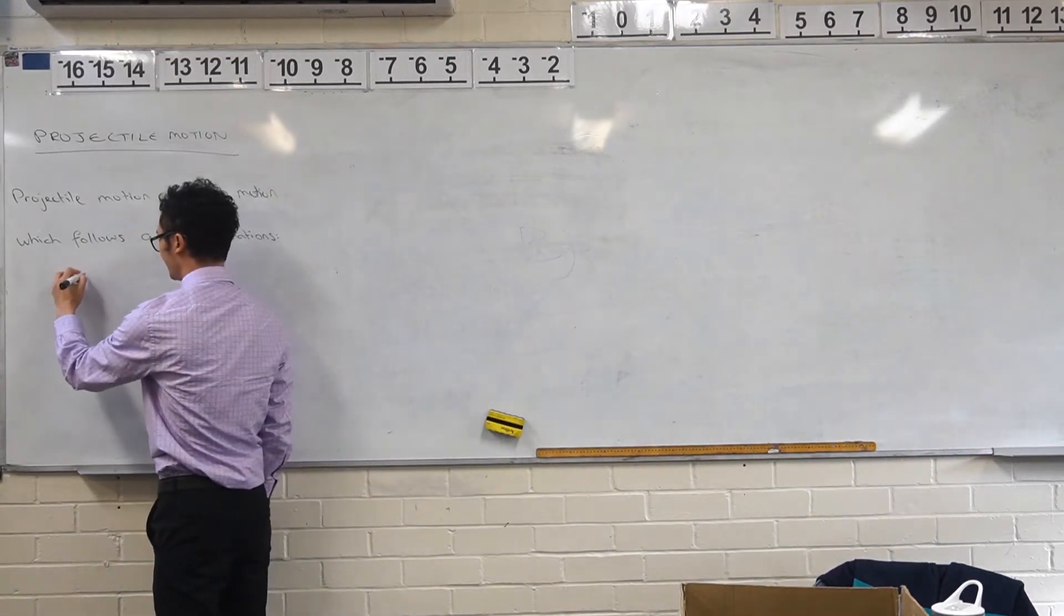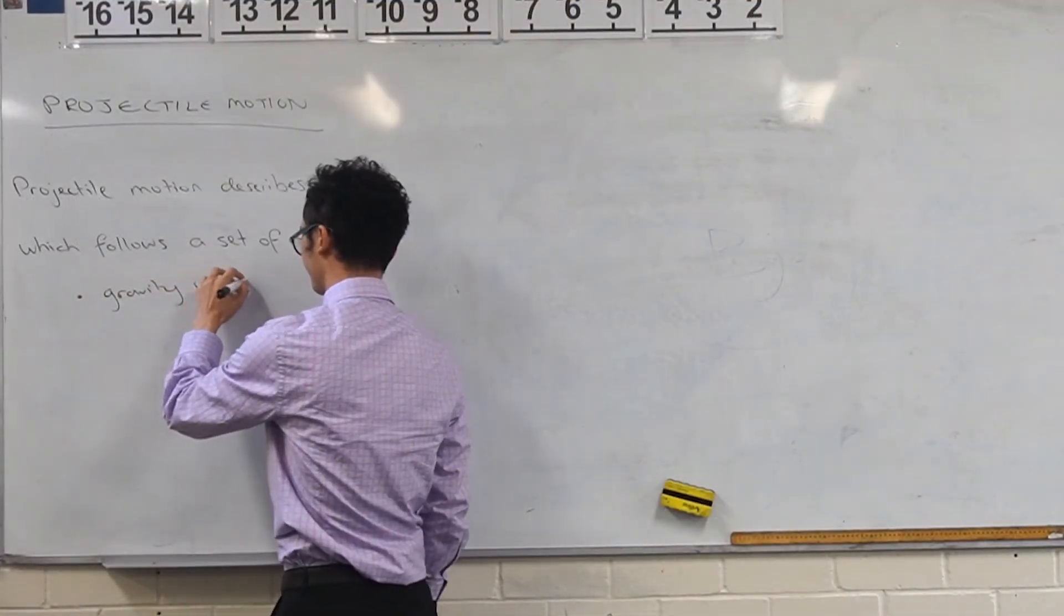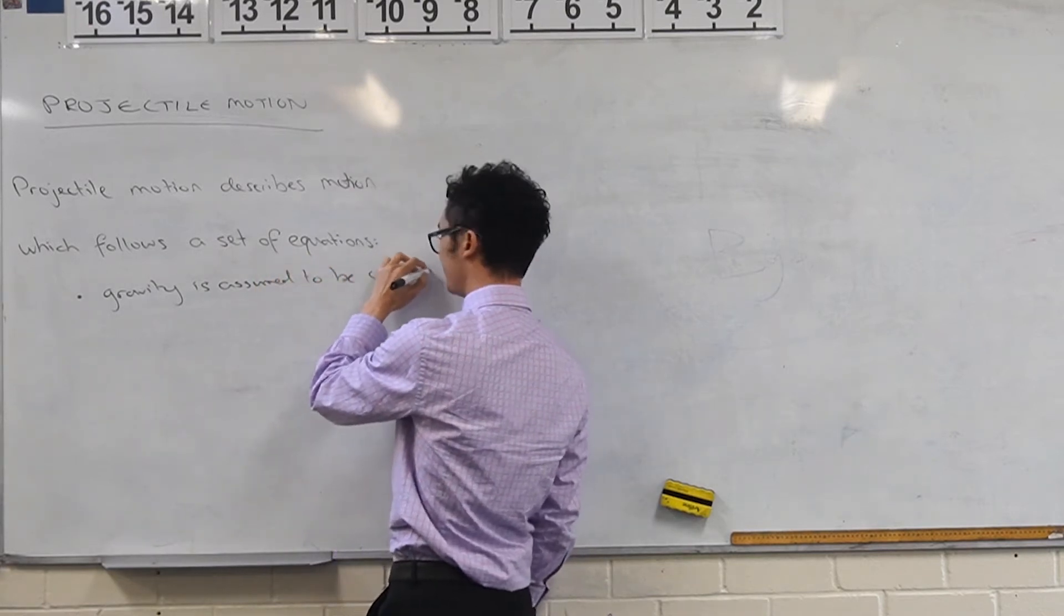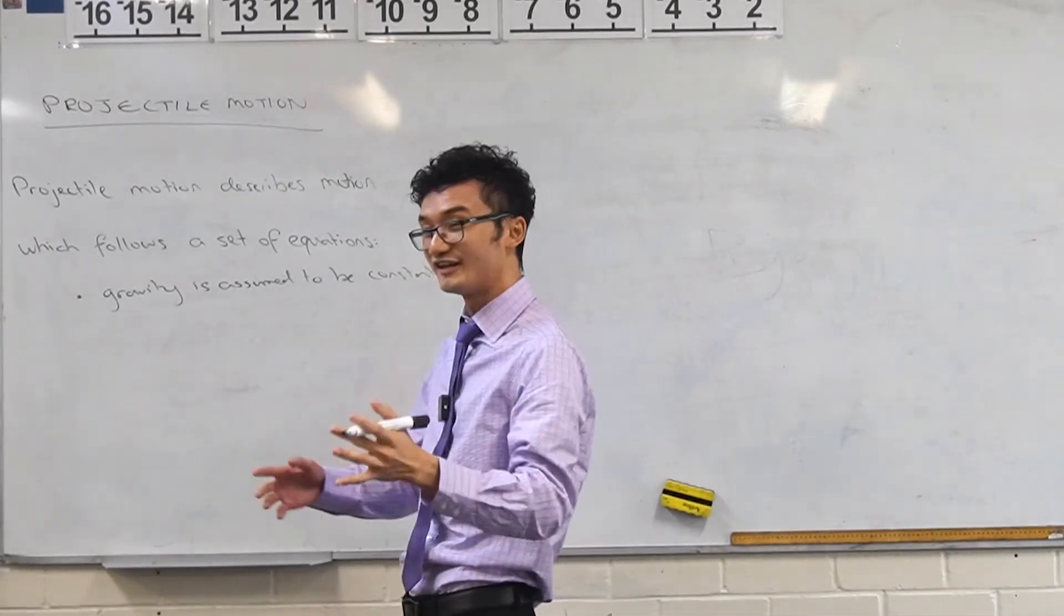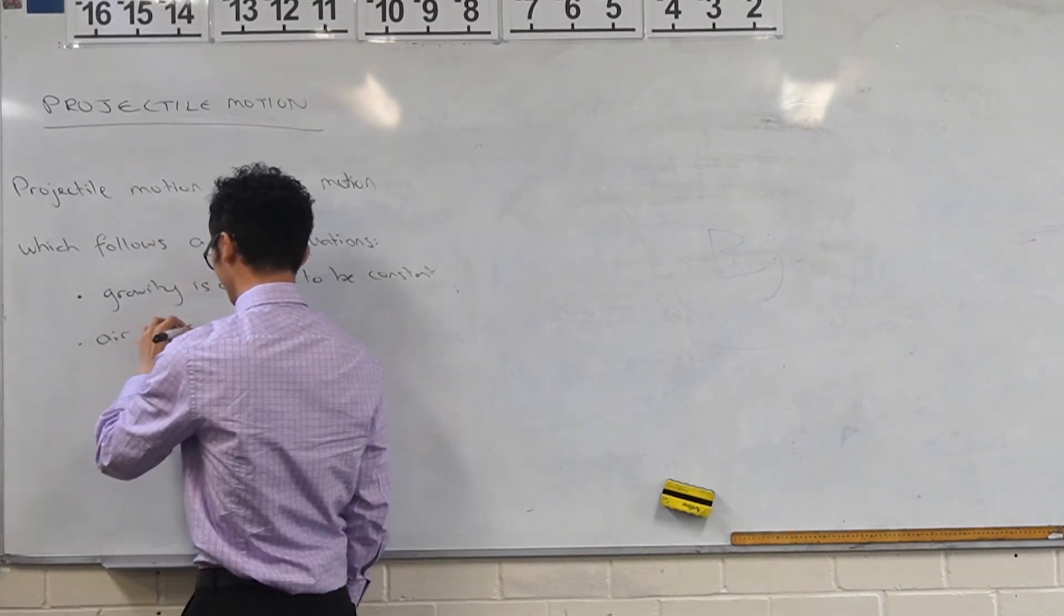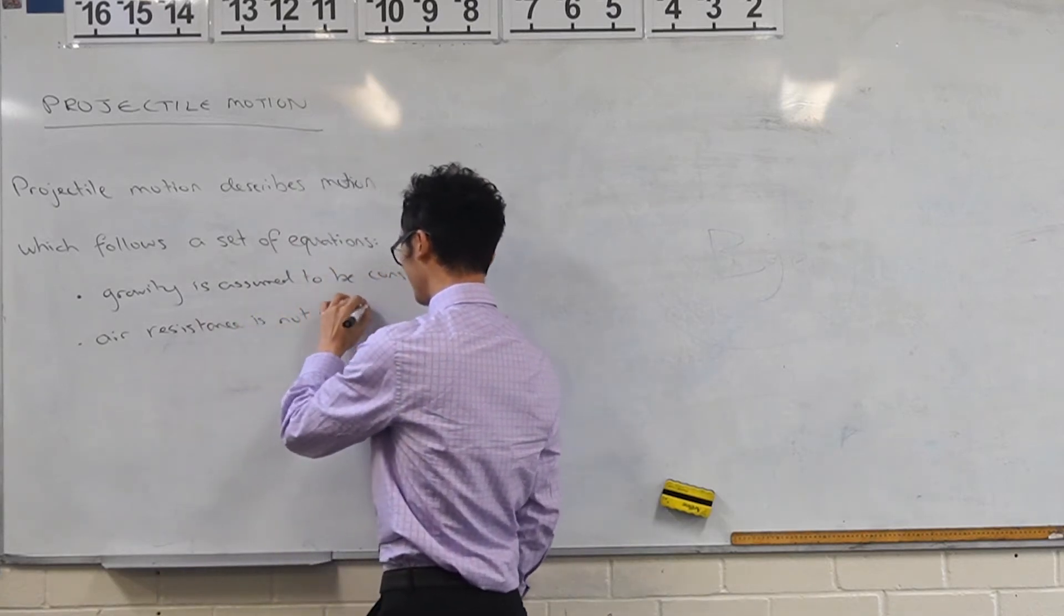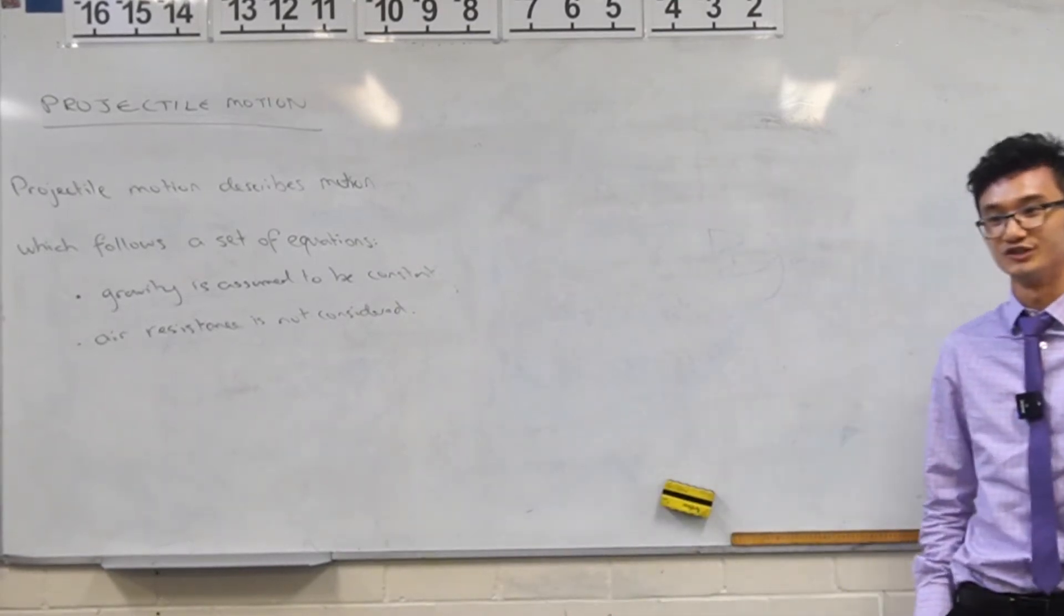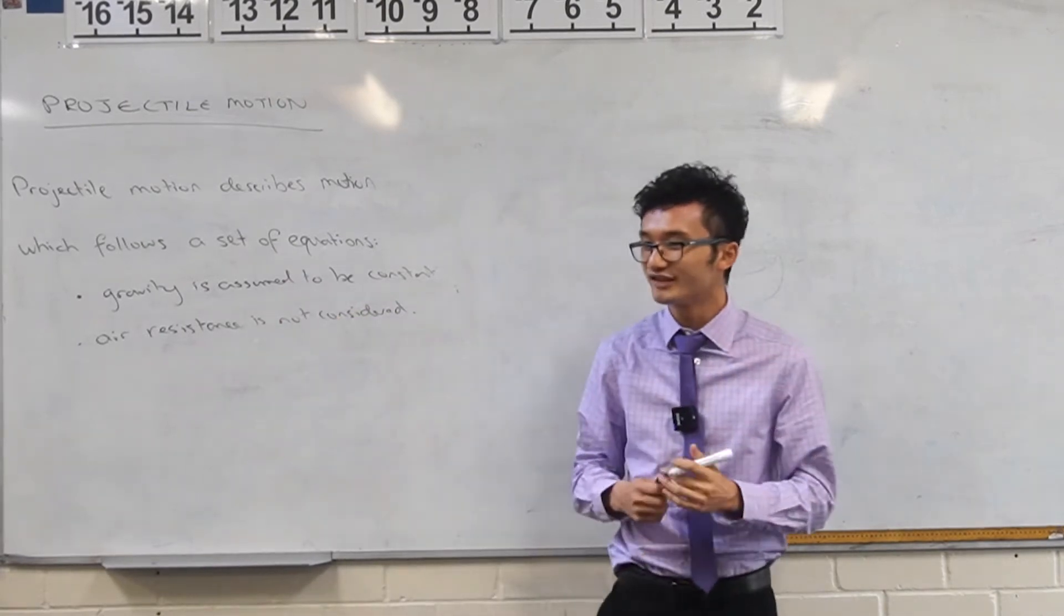Because we know that we do have constraints generally, right? So first thing is that gravity is assumed to be constant. Yeah, so funnily enough, air resistance is not considered. But if you do extension 2 mathematics, you will look at something called resisted motion, which is more accurate modelling, I suppose, of this. Same thing with gravity, right? Gravity is not actually constant.